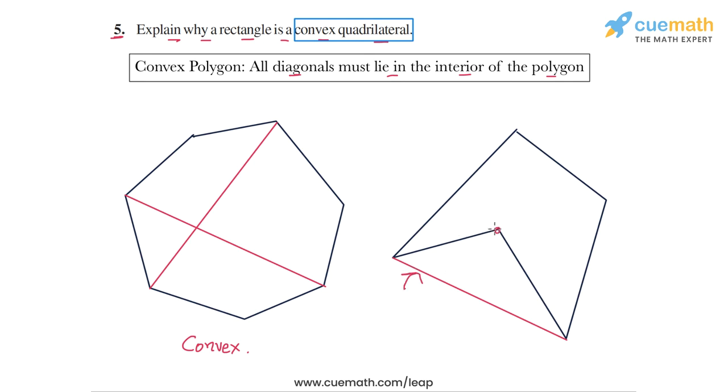This is happening because the angle at this vertex is a reflex angle, and hence this diagonal lies outside the polygon. So this is an example of a non-convex polygon, which we sometimes also refer to as a concave polygon.